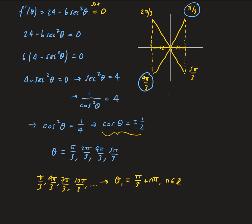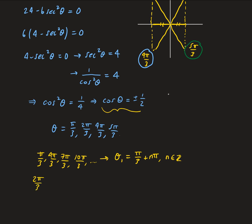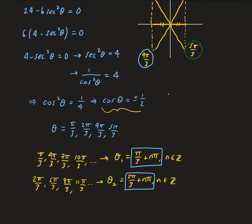Now for the other values: 2 pi over 3 and 5 pi over 3 are also separated by an angle of pi. Continuing to add pi gives 8 pi over 3, then 11 pi over 3, and so on. So this can be represented as theta₂ equals 2 pi over 3 plus n pi, where n is an integer. Those are the two general solutions, and together they pick up all the critical numbers if we continue going around the unit circle.